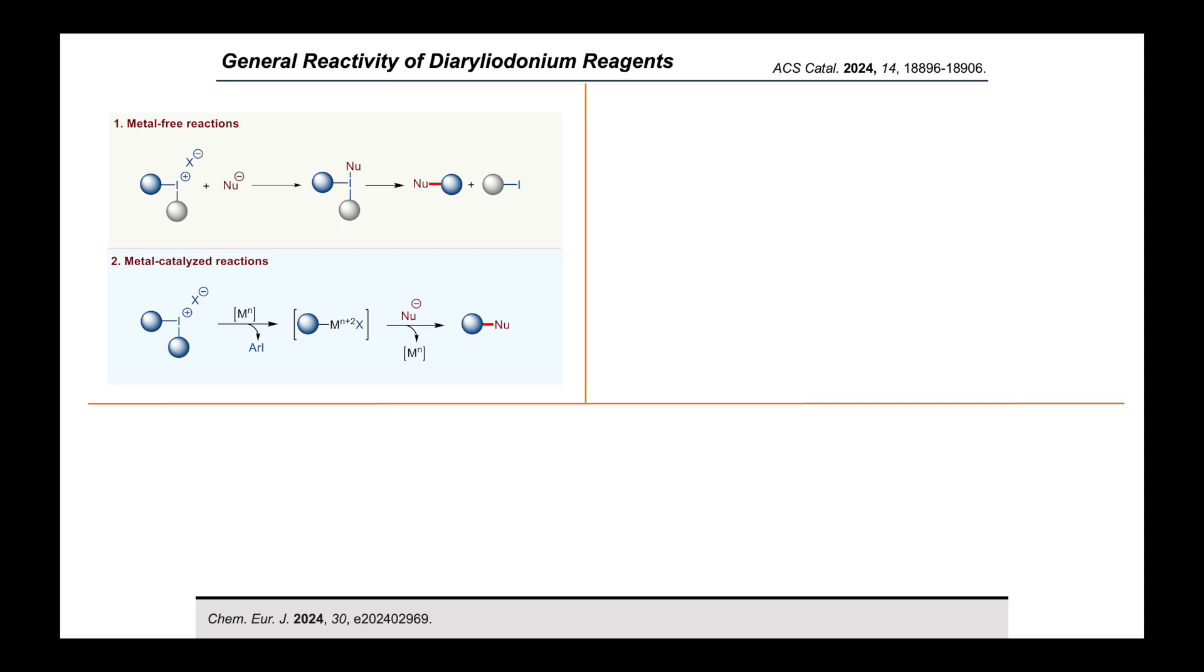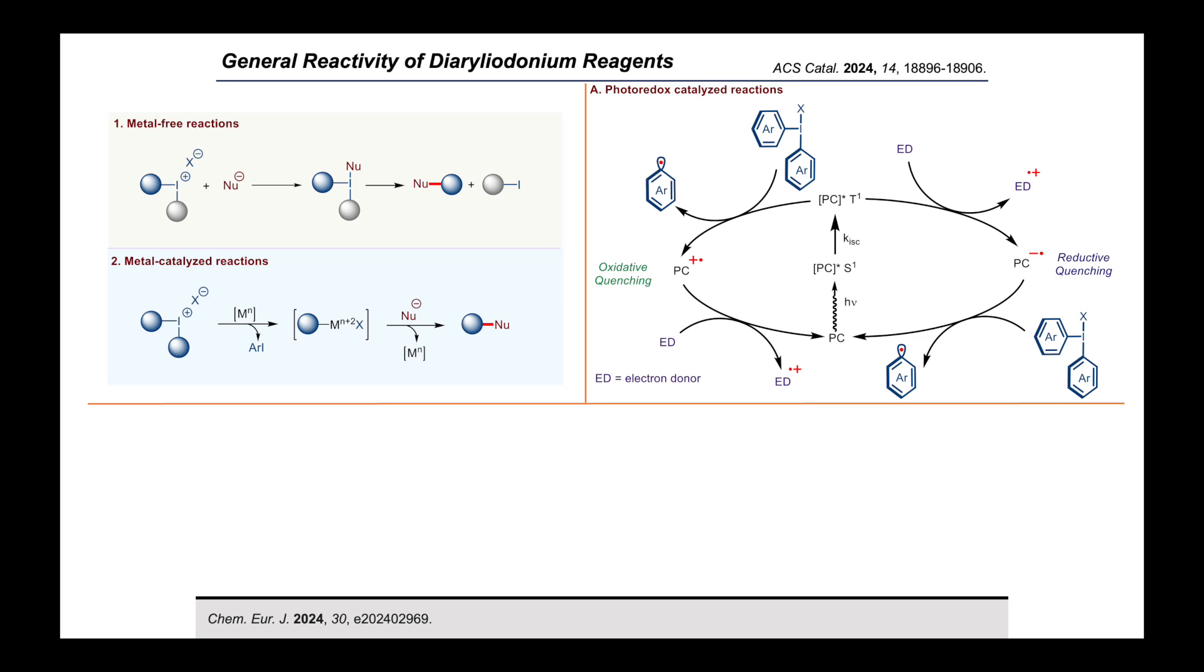Diaryl iodonium reagent participates in two different ways under visible light irradiation. Firstly, in the presence of photocatalyst, diaryl iodonium reagent can behave in two ways for the generation of aryl radicals. The excited-state photocatalyst can give an electron to diaryl iodonium reagent to generate aryl radicals and forming oxidative state of the photocatalyst, which then comes back to its original state by accepting an electron from a suitable donor. This is called oxidative quenching pathway.